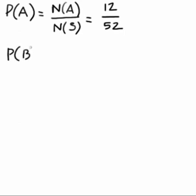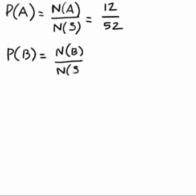The probability of event B is the probability that either a 2 of hearts, 3 of diamonds, 8 of spades, or king of clubs is drawn. The classical approach tells us to take the number of elements in event B and divide by the number of elements in the sample space. There are only 4 cards in event B — specifically the 2 of hearts, 3 of diamonds, 8 of spades, and king of clubs — giving us a probability of B of 4 over 52.